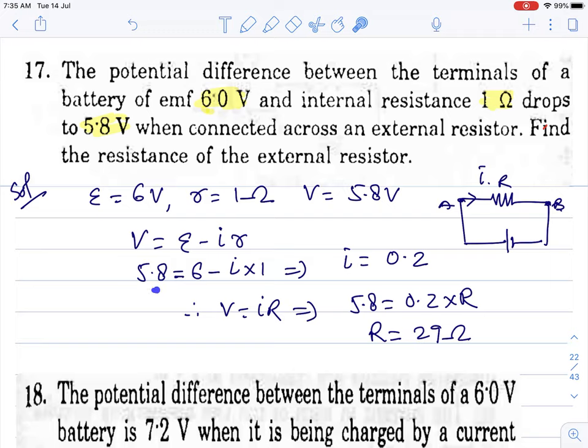E is given as 6V, EMF. R is 1 ohm. Terminal potential is this much. During discharging, V equals E minus IR. Putting values here, we get I. Now from here to here, apply Ohm's law. V equals IR. I is already calculated. That's the current for the whole circuit. But for this external part, apply Ohm's law, V equals IR.